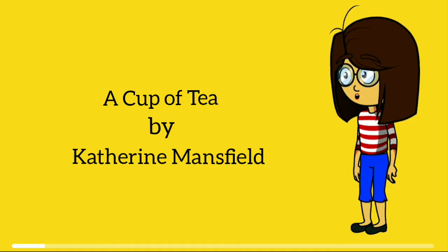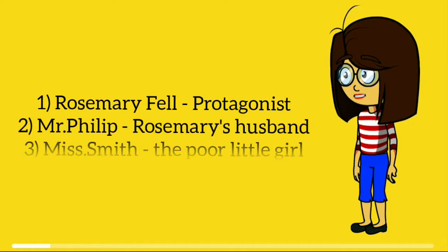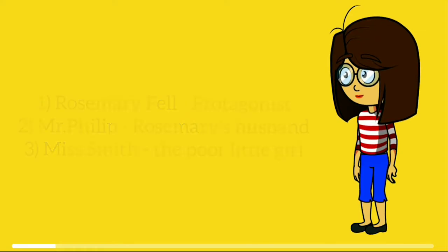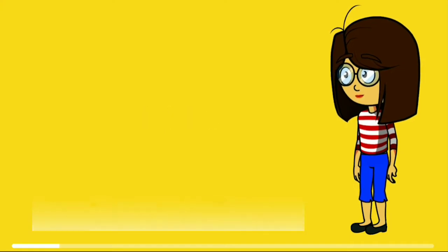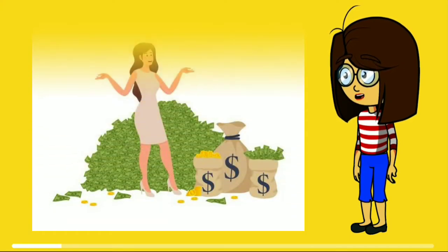The main characters involved in this short story were Rosemary Fell, Mr. Philip (Rosemary's husband), and Miss Smith, the poor little girl. This short story was set in the 1920s in London, and the story revolved around the character of a wealthy woman named Rosemary Fell.